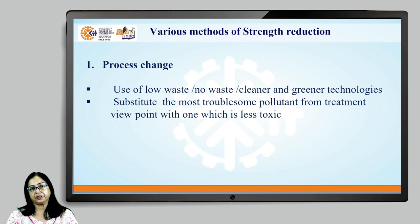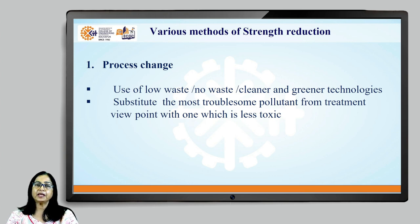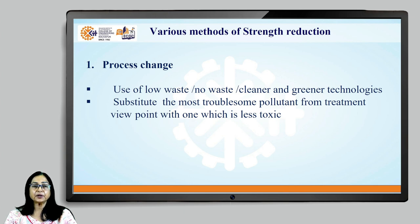Let's first begin with process change. Nowadays we have many advanced new technologies, also known as cleaner or greener technologies, and these technologies when in use produce either low waste or no waste. This process change can be a very good method for reducing strength. While selecting a process change, we target the most troublesome pollutant from a treatment point of view — the most toxic or difficult to treat — and try to replace it with other chemicals which are either less toxic or non-toxic.